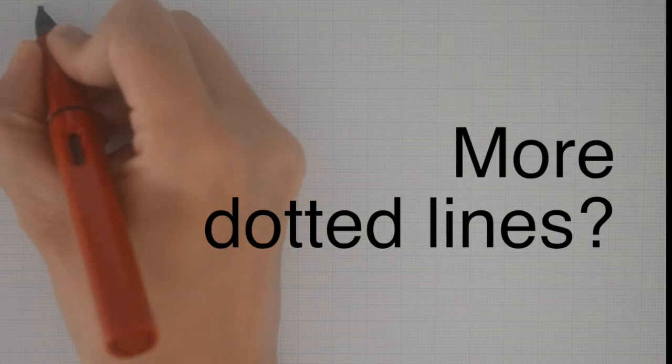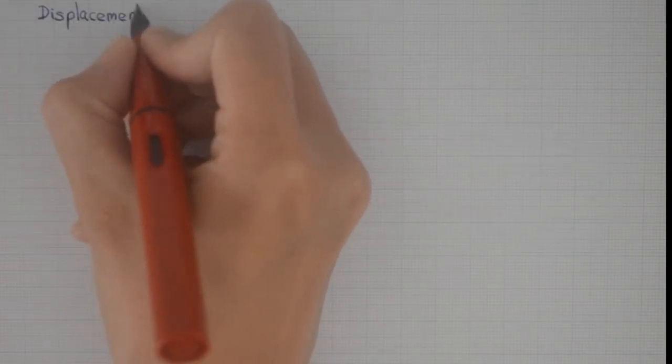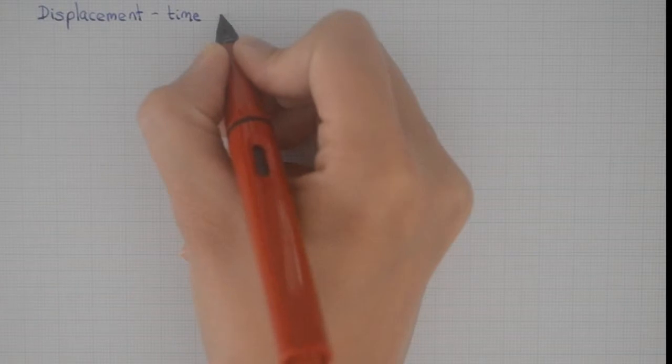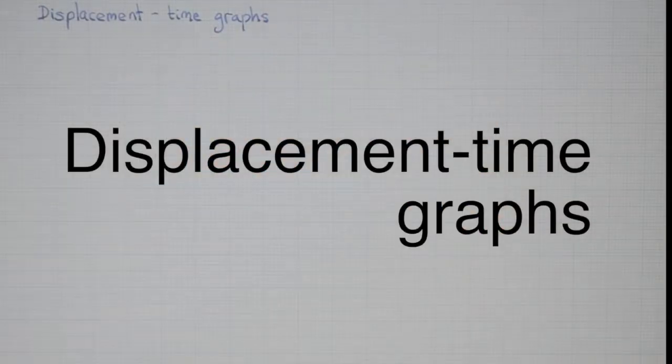I could draw more waves with dotted lines, but that's just a complete waste of time. So instead, I'm going to plot the next type of graph known as a displacement-time graph.